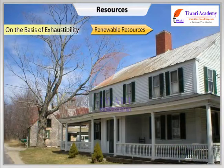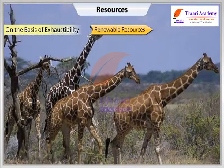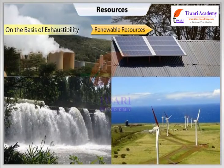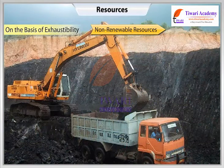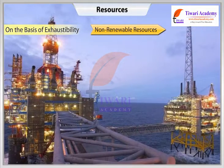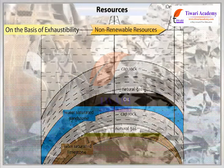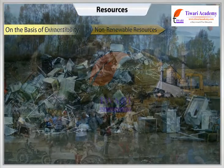On the basis of exhaustibility, renewable or replenishable resources include solar energy, wind energy, water, forest, and wildlife. Renewable resources may be further divided into continuous or flow, and biological. Non-renewable resources include fossil fuels, which take millions of years to form. Some resources like metals are recyclable, while fossil fuels cannot be recycled and get exhausted with use.